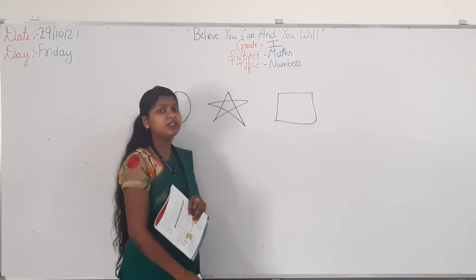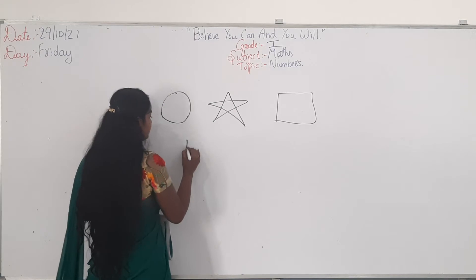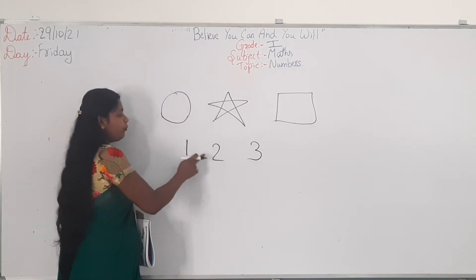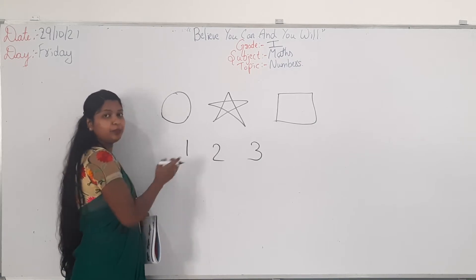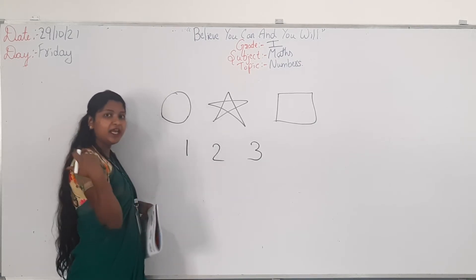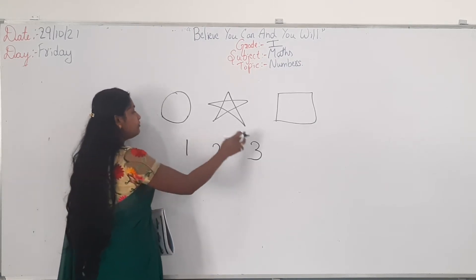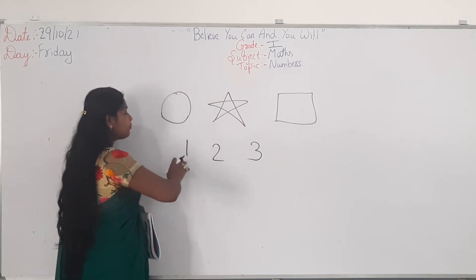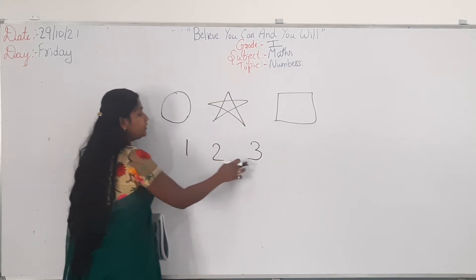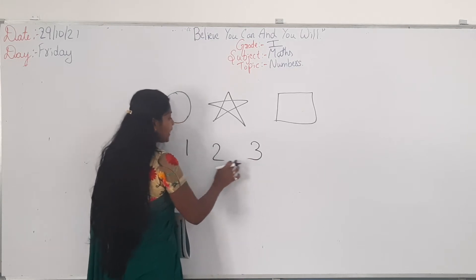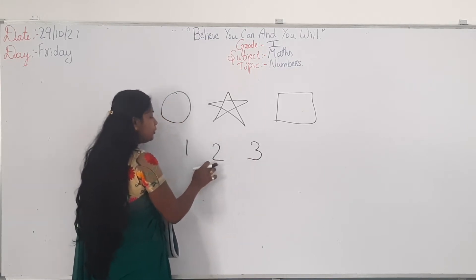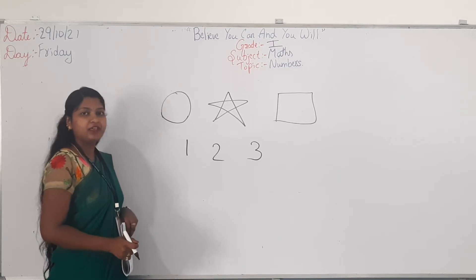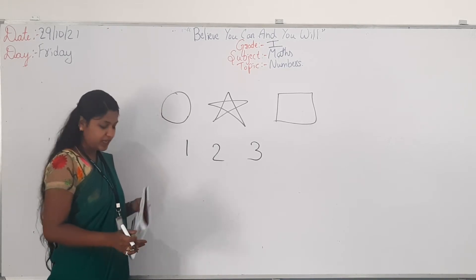Similarly with numbers — for example, 1, 2, 3. See, 1 is before 2 and 3 is after 2. So, 1 is before 2, 3 is after 2, and 2 is between 1 and 3. Is it correct? Yes.